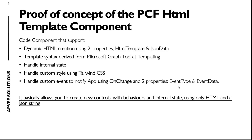It also implements some interesting features like internal state, and the possibility to write custom styles using the syntax of Tailwind CSS. The Tailwind CSS syntax is just a set of CSS class names that you can use to apply styles to HTML elements. And of course, with this component you are able to handle custom events by using the standard onChange property, along with two output properties — event type and event data — to pass from the component to the Canvas app which custom event you want to invoke and the data you want to pass. So basically, it's a component that allows you to create new components with behaviors and internal state, not only to show static HTML.